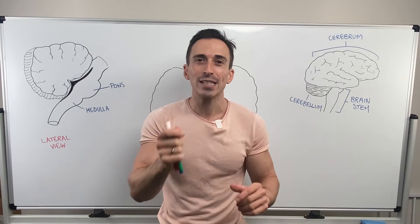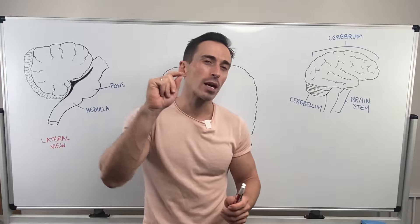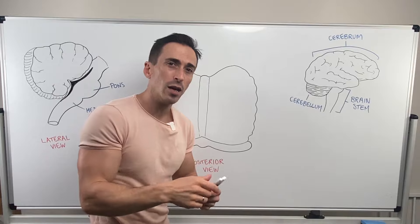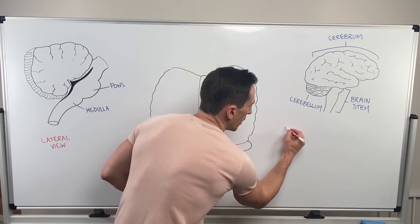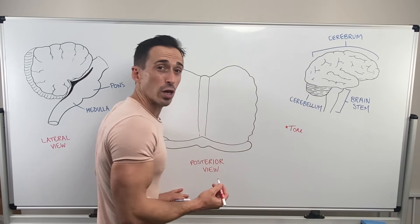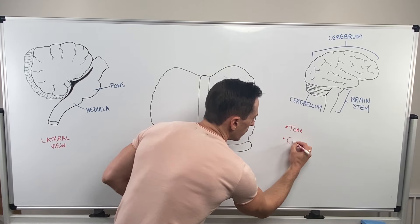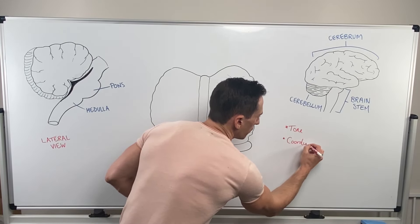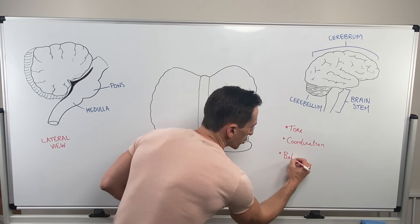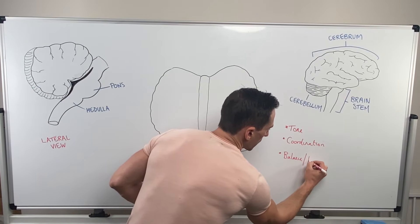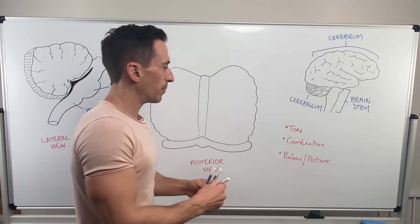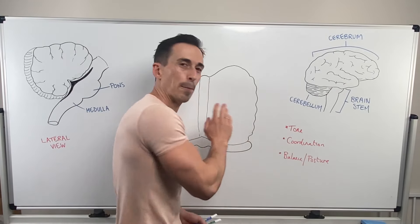So what the cerebellum does is it fine-tunes motor movement, and it does it through a couple of different functions. You can divide what the cerebellum does into: it helps fine-tune muscle tone, coordination, and balance and posture. These are the main functions of the cerebellum — muscle tone, coordination, balance, and posture.